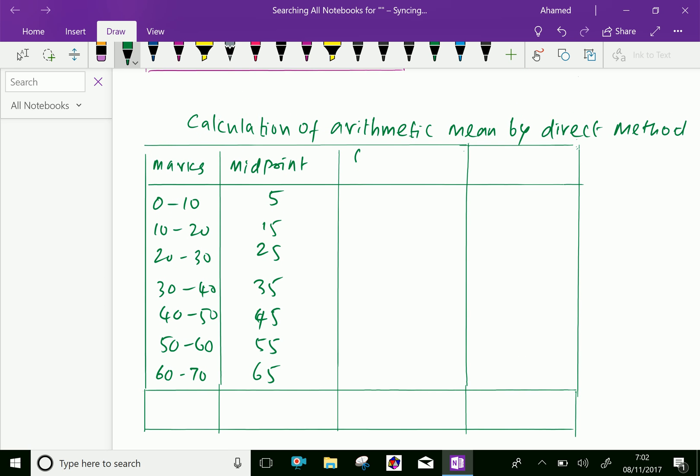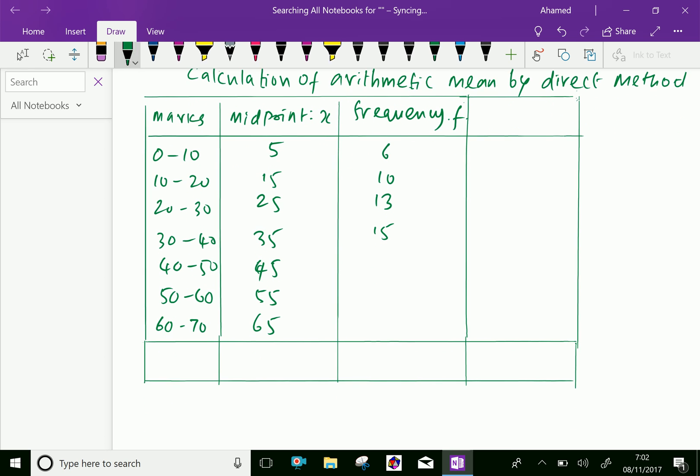Now, the frequency means number of students. Given midpoint, keep it x. Frequency is f: 6, 10, 13, 15, 12, 6, and 2.